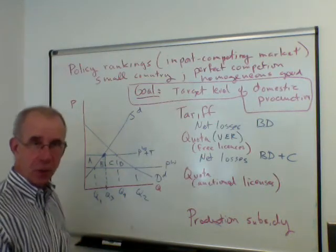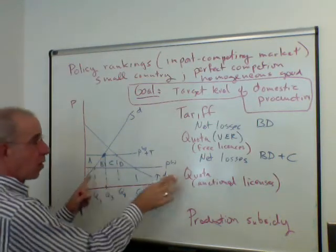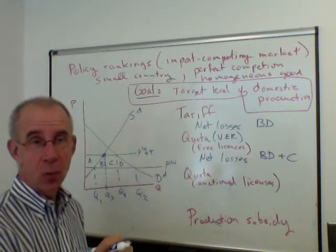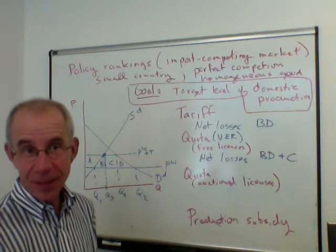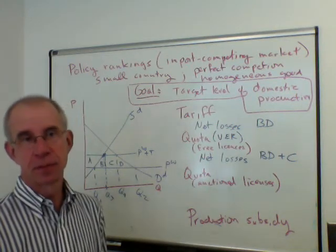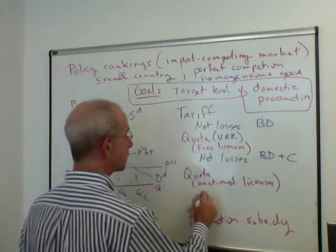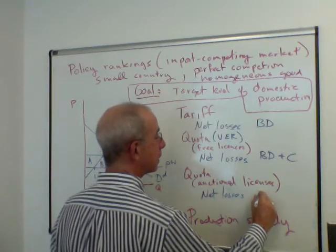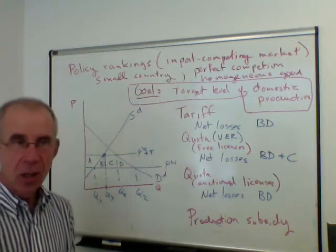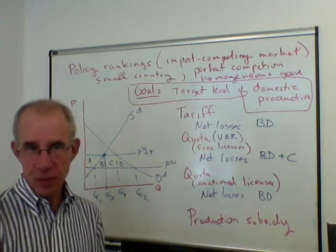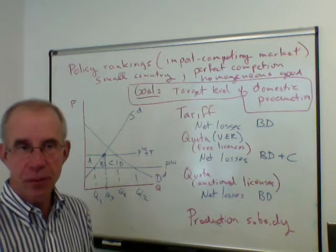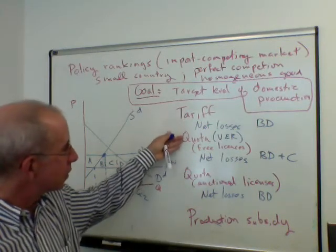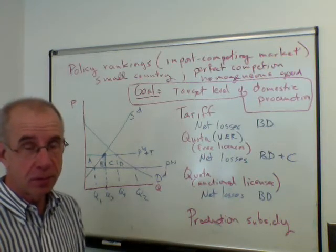We also showed how, if you auctioned the licenses to foreigners so they had to pay for the right to enter this market — and moreover, had to compete with other foreign firms trying to access this protected market — then the net losses to the country could be only B and D, because C, the quota rents, would be paid by foreigners to the domestic government, partially compensating for losses. The difference between these two types of quotas is all about how you allocate the licenses.